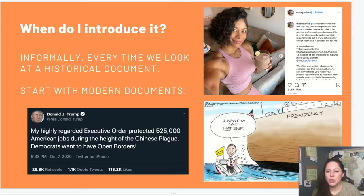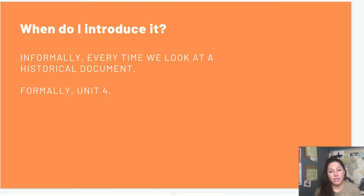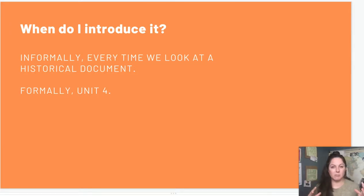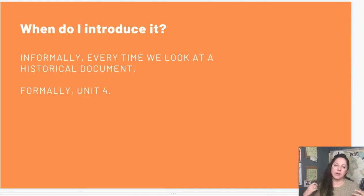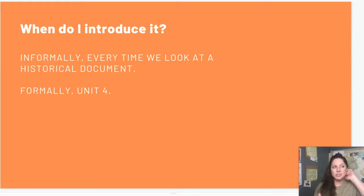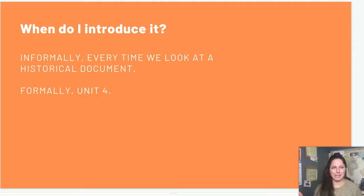So when do I introduce it formally? Unit four. Unit four is when I go through and say, okay, here's the acronym — let's do some practice with modern documents, and now let's do some practice with documents from unit four. The reason I wait till unit four is that by that point we're well into the class and we've gotten a lot of the basics down. And again, I've been sowing the seeds of this all year, but not explicitly with the acronym.